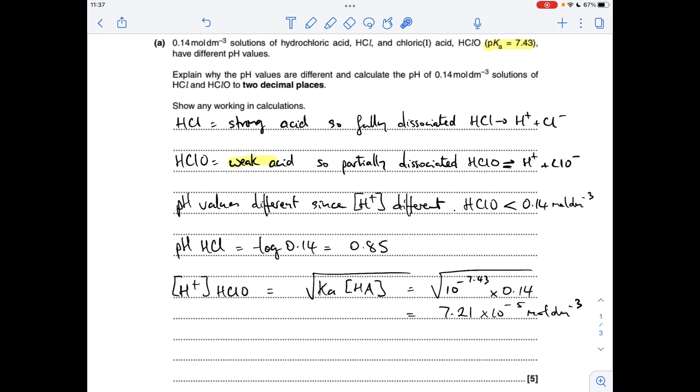So to get the pH of HClO, we need to calculate its H plus concentration first, using this expression here, square root of Ka H A, is what I call it. So that's the square root of the Ka times the original concentration of the acid. They haven't given us Ka, but they've given us pKa, so that would be 10 to the minus pKa, to turn it into Ka, multiplied by the original concentration, which was 0.14, and you get this 7.21 times 10 to the minus 5 moles per centimeter cubed.